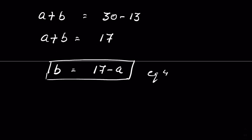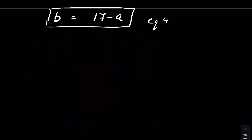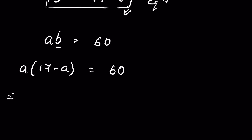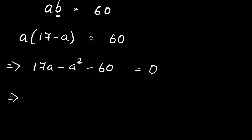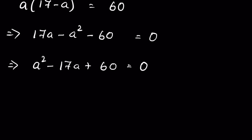From equation one, ab equals 60. Substituting b from equation four: a times (17 minus a) equals 60, or 17a minus a squared minus 60 equals 0. Multiplying both sides by minus one: a squared minus 17a plus 60 equals 0. This is a quadratic equation that we can factorize.